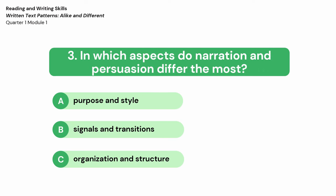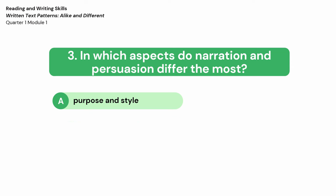Number 3: In which aspect do narration and persuasion differ the most? A. Purpose and style. B. Signals and transitions. C. Organization and structure. The correct answer is A — purpose and style.